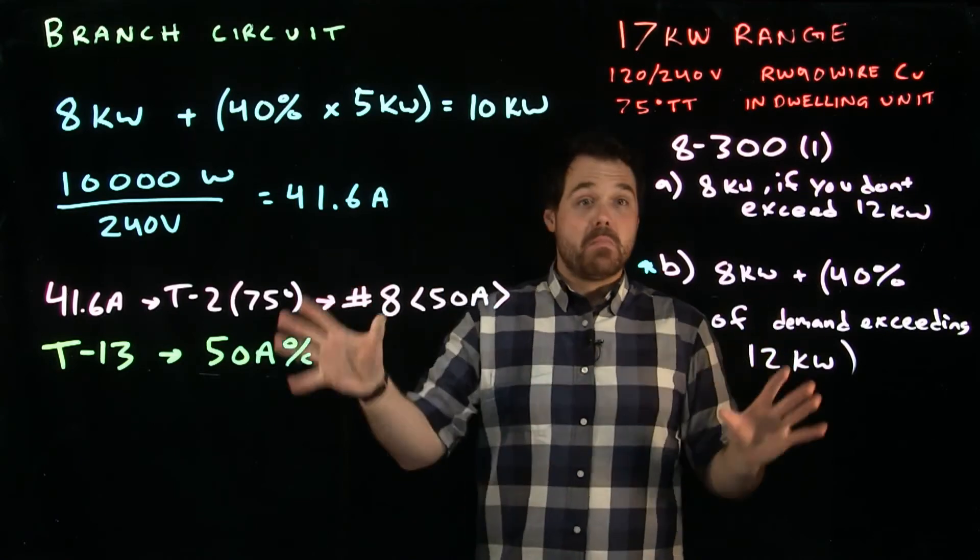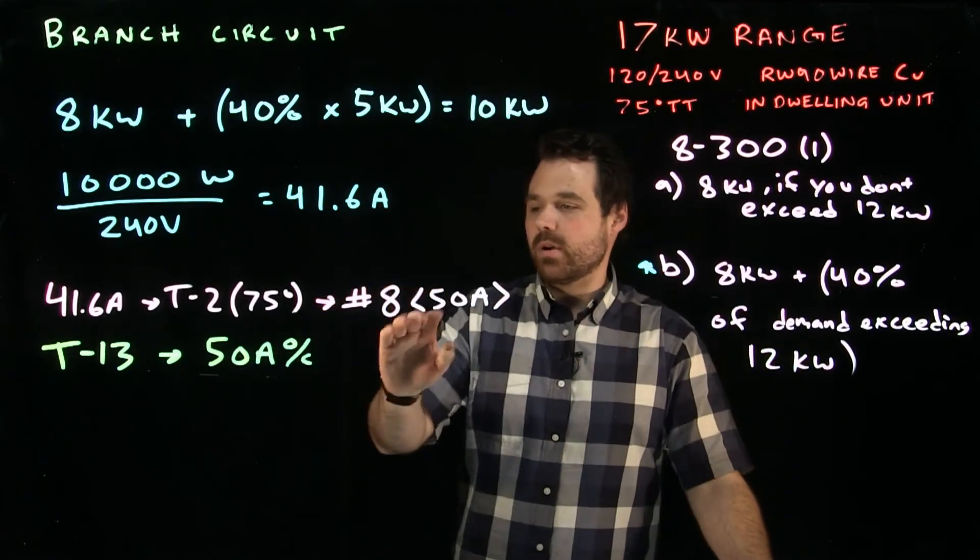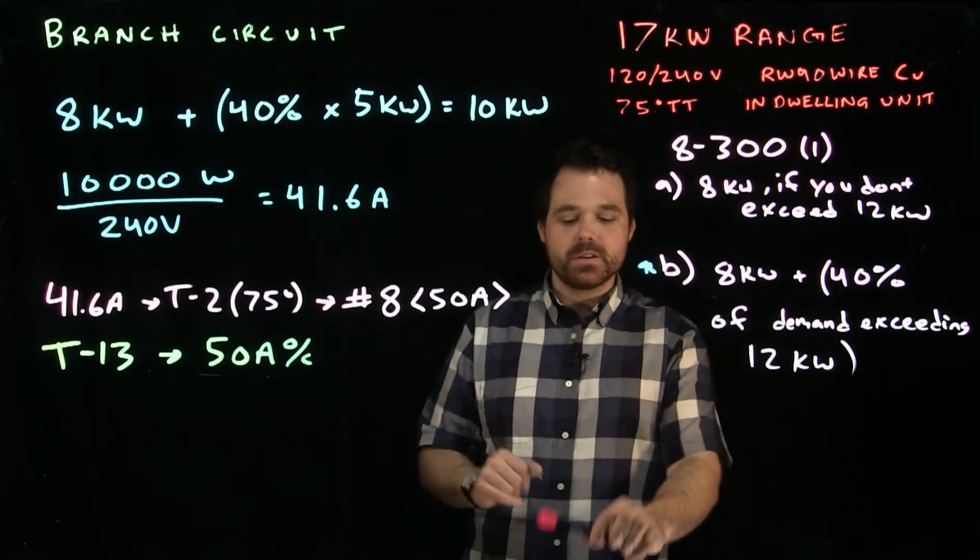Table 13 is going to tell us we would use a 50 amp overcurrent device on that number 8. Perfect. Fantastic. So that's basically the process to size a range. So we have our number 8. We got our 50 amp overcurrent. That's what we want to do.